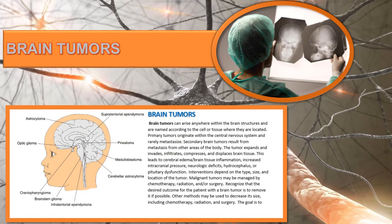The notes contain an overview of brain tumors, which can arise anywhere within the brain structures. They are named according to the cell or tissue where they are located. Primary tumors originate within the central nervous system and rarely metastasize. Secondary brain tumors result from metastasis from other body areas. Brain tumors can lead to cerebral edema, brain tissue inflammation, increased intracranial pressure, neurological deficit, hydrocephalus, and pituitary dysfunction. Interventions depend on the size, location, and presentation of the tumor.